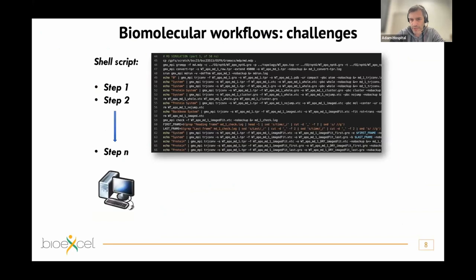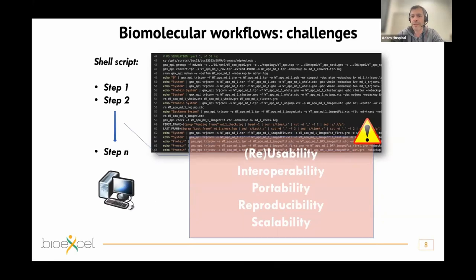We also analyzed how we were building our workflows. This is a real example — a shell script. Nowadays it might be a Python script, but the idea is the same: line by line, you write all the command lines and run the shell script step by step. When you want to share this workflow with a colleague or transfer it to a different machine, you can immediately identify many problems: usability problems, interoperability between tools, portability between machines, reproducibility, and scalability.